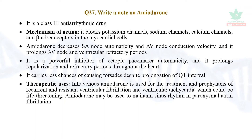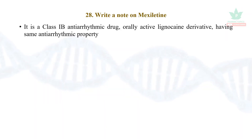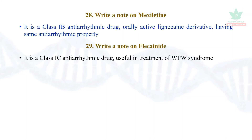Amiodarone may also be used to maintain sinus rhythm in paroxysmal atrial fibrillation. Adverse effects: this drug contains iodine in its structure, so it may cause thyroid disorders, peripheral neuropathy, myocardial depression, lung fibrosis, liver toxicity, corneal micro-deposits in the eye, and photosensitivity. Mexiletine is a Class 1b anti-arrhythmic drug very similar to lidocaine but can be given orally. Flecainide is a Class 1c anti-arrhythmic drug, useful in Wolff-Parkinson-White syndrome.